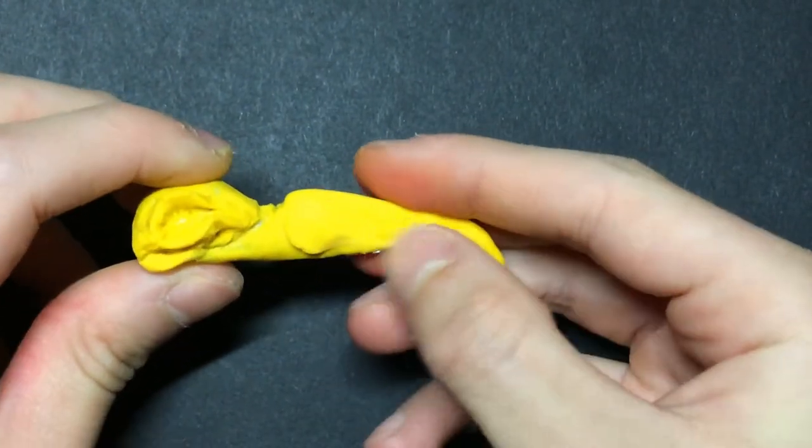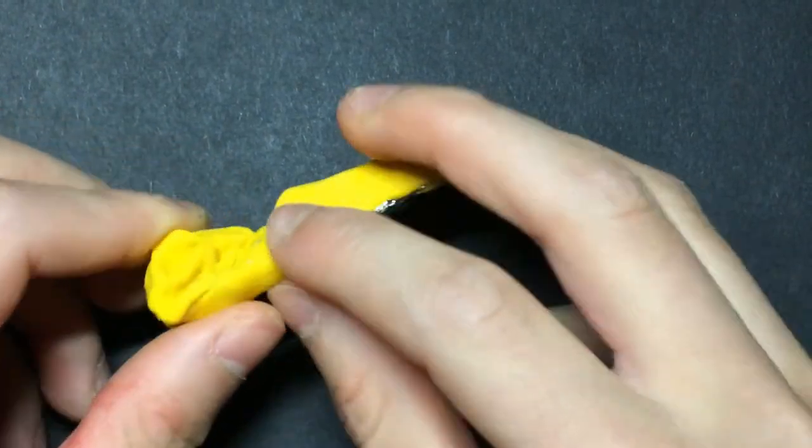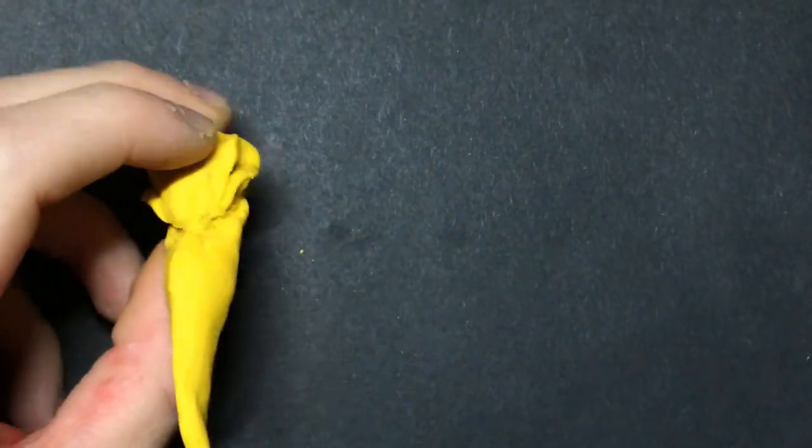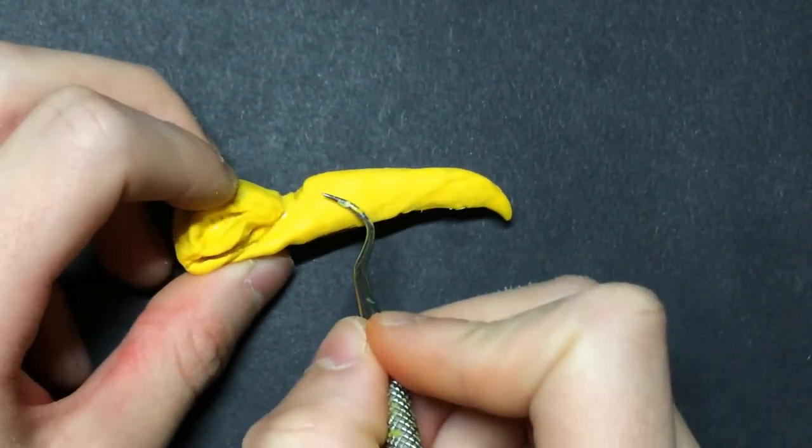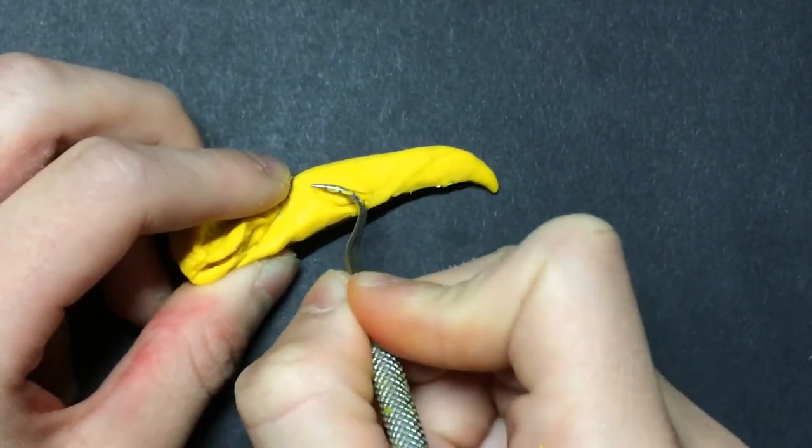You want to add a big blob of Fimo to the beak, and whilst you could use some tinfoil to save on clay, it will make carving out the nostrils more difficult. Once that's in place, you can start working on the nostrils.